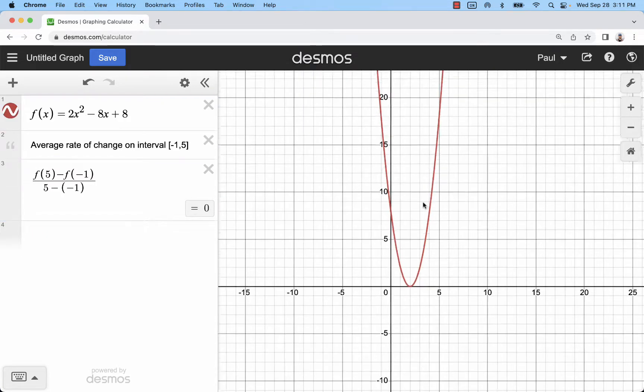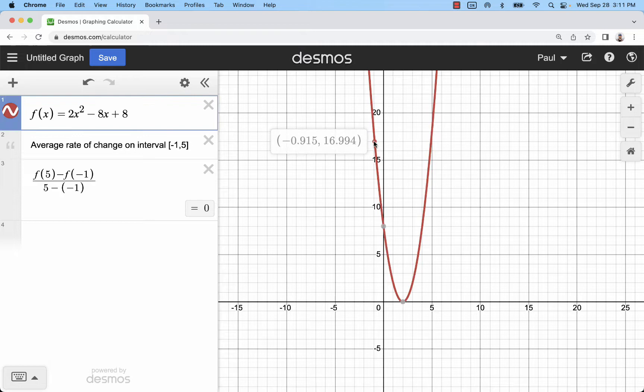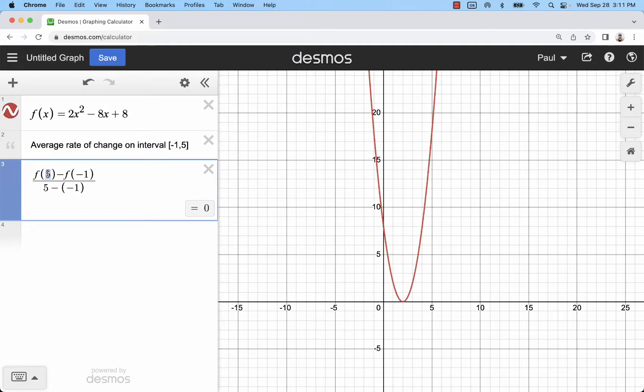So I must be equal across here from -1, which is right there, (-1, 18) to (5, 18). And now I could change this to maybe 6 and 0.